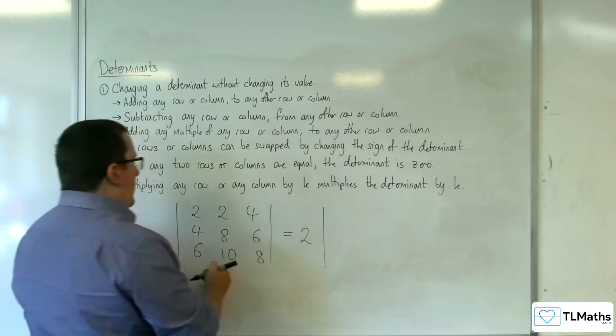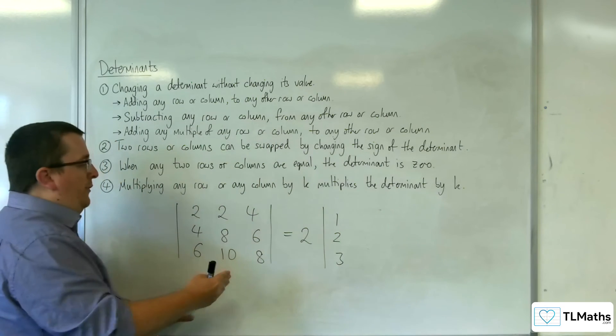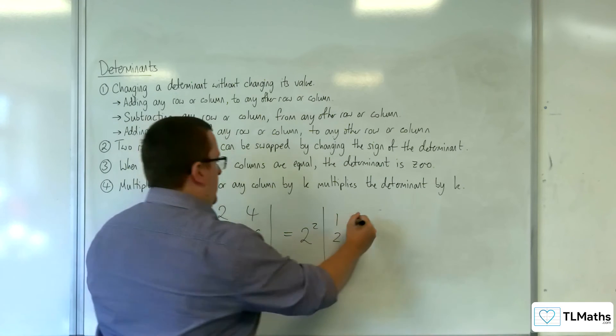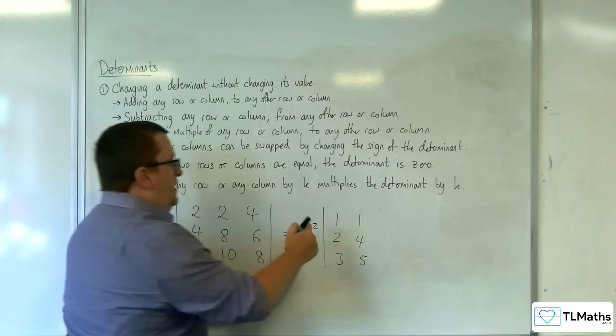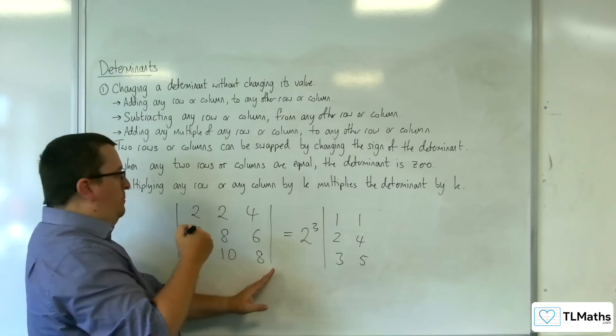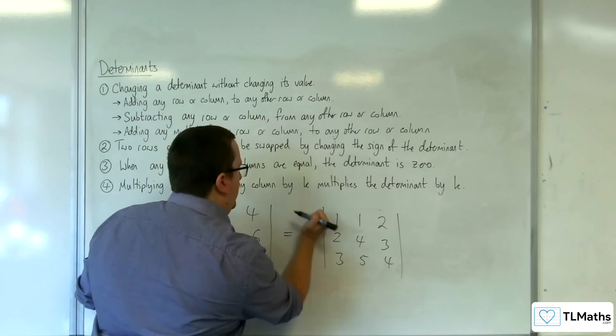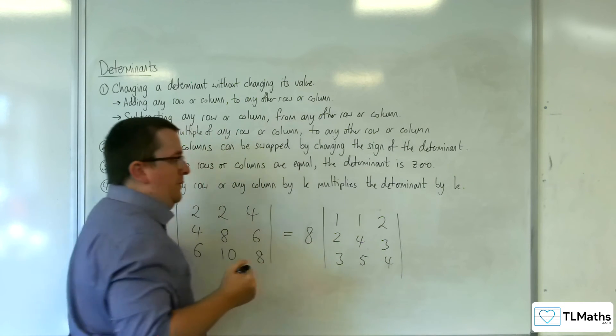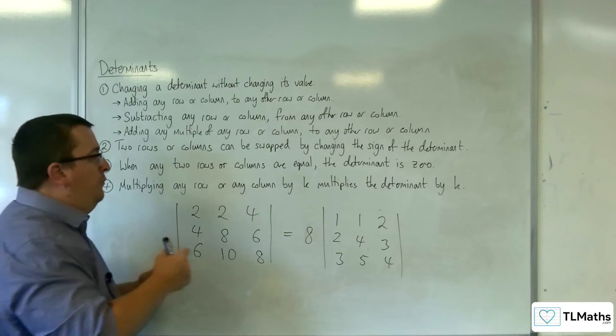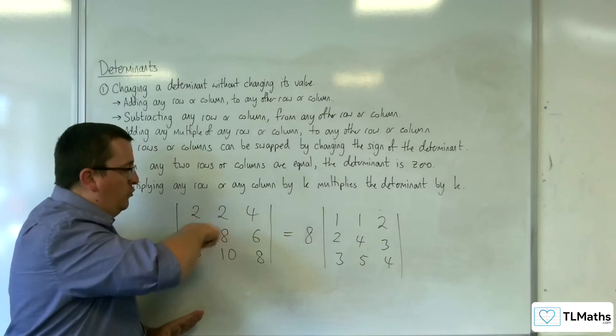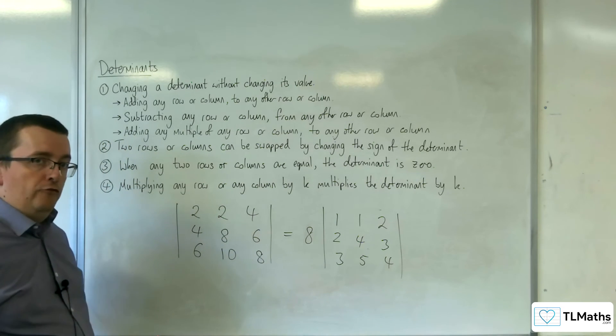Then you would factor out 2 from the middle column, so we're up to 2 squared, so then 1, 4, 5. And then 2 from the third column, so we do now 2 cubed, so 2, 3, 4. And so you would have 8 out the front. So, if you factor something out the whole matrix, so if it's a 3 by 3, then whatever number it is gets cubed out the front.